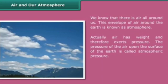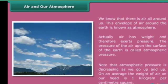There is air all around us, and this envelope of air around the Earth is called the atmosphere. Air has weight and therefore exerts pressure. The pressure of the air upon the surface of the Earth is called atmospheric pressure. Note that atmospheric pressure decreases as we go higher up. On average, the weight of air on our head is one kilogram per centimeter square.